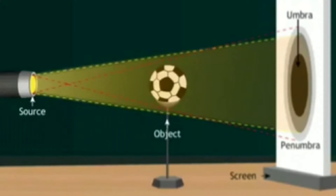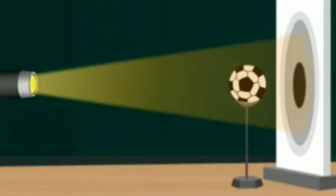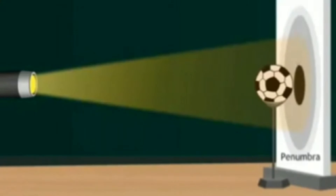Penumbra is the part which is in partial darkness — it is faint and receives some light from the torch. Now, bring the ball closer to the screen. As we move the ball towards the screen, umbra reduces and penumbra increases.